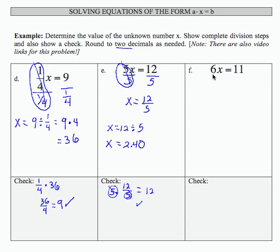The last one, 6x equals 11. Let's divide both sides by 6. And again, we're creating a form of 1 here on the left-hand side. Therefore, I obtain my fraction result, x equals 11 over 6.